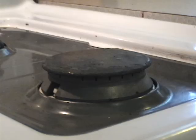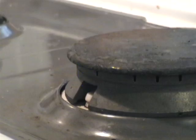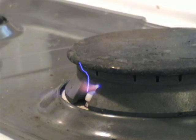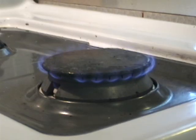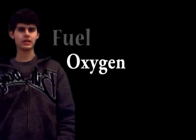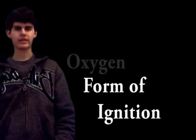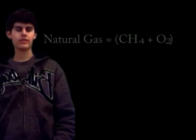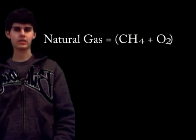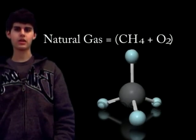While we're waiting for that to melt, let's look at the properties and characteristics of fire. Fire requires three components in order to exist: fuel, oxygen, and some form of ignition. The fuel we'll be using for the stove is natural gas, which is CH4 plus O2.